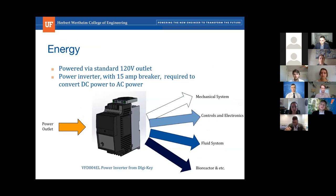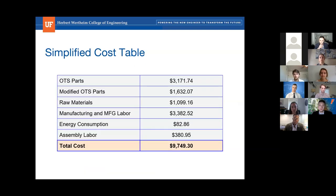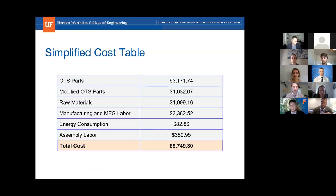The system is powered by a standard 12-volt outlet connected to a power inverter with a built-in 15-amp breaker, converting DC to AC power and providing 2.5 amps of AC power for use. The total cost breakdown shows the majority of spending on OTS parts and manufacturing labor, with the overall total coming in approximately $250 under the $10,000 budget.